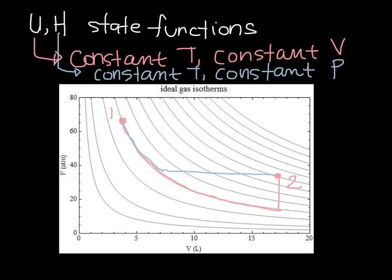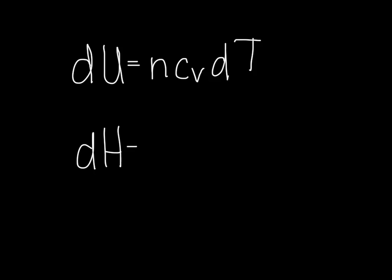So any process that we're interested in, and where we are trying to calculate a state function, we could break up in this way, and then we can, as they are written, or as we saw them before, where dU equals nCv dT, and dH equals nCp dT.